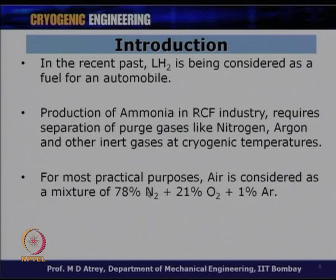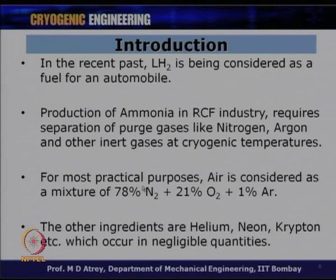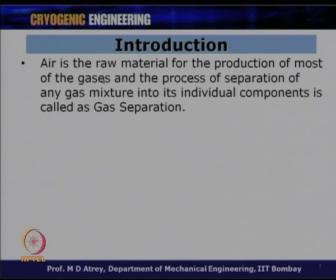If we want to use nitrogen, oxygen, and argon, we have to separate them from air. The other ingredients — helium, neon, krypton — occur in negligible quantities and are difficult to extract from air. Normally, air is used to obtain nitrogen, oxygen, and argon, which are abundantly required in industries. Air serves as a raw material for the production of most gases. The process of separating a gas mixture into its individual components is called gas separation.